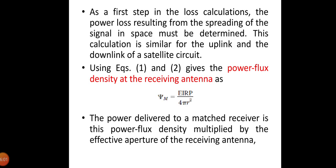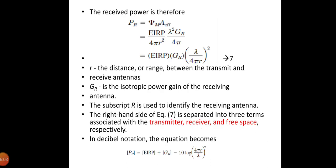The received power is therefore P_R equals ψ_m times A_effective equals EIRP divided by 4πr². A_effective is given by λ² times G_R divided by 4π. Therefore P_R can be written as EIRP times G_R times (λ/4πr)². Recall that r is the distance or range between the transmit and receive antennas, and G_R is the isotropic power gain of the receiving antenna. The subscript r identifies it as the receiving antenna.